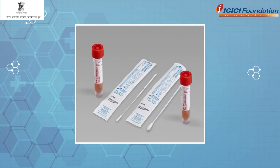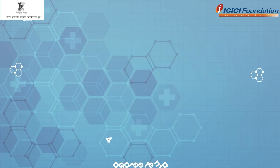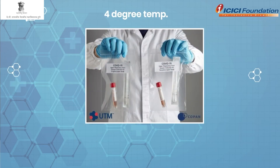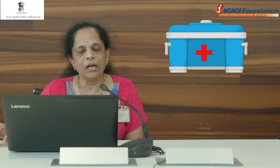Once the swab is taken, it is put in a viral transport medium shown in a test tube — a screw cap tube with a liquid medium. The virus remains alive in this medium, and the tube is transported at 4 degrees temperature. When transporting the sample to the lab, one must ensure it is not spilled — it is placed in a ziploc plastic bag and then transported in a thermopol box with a gel pack or with an ice pack.